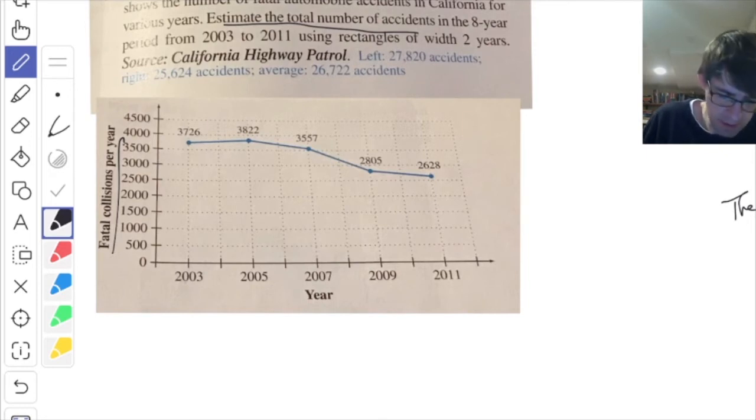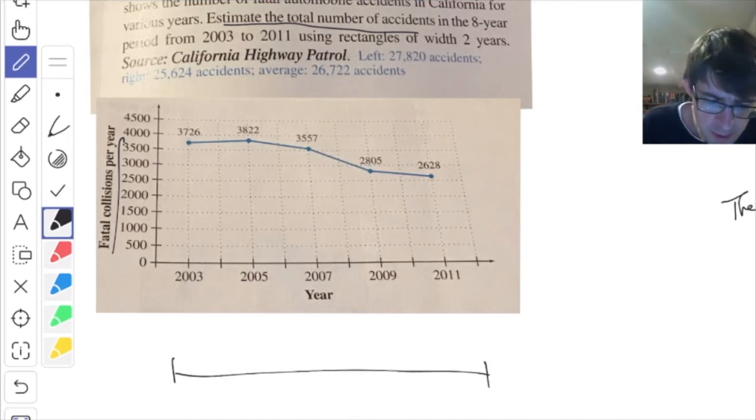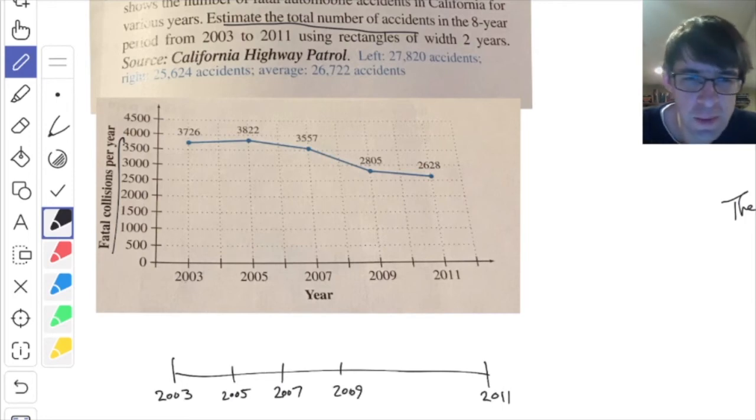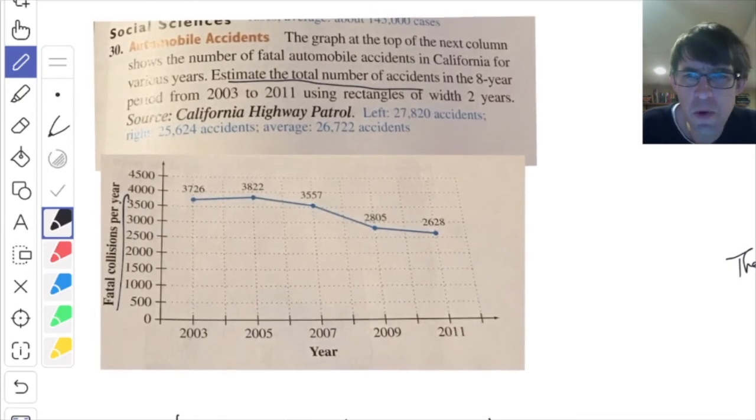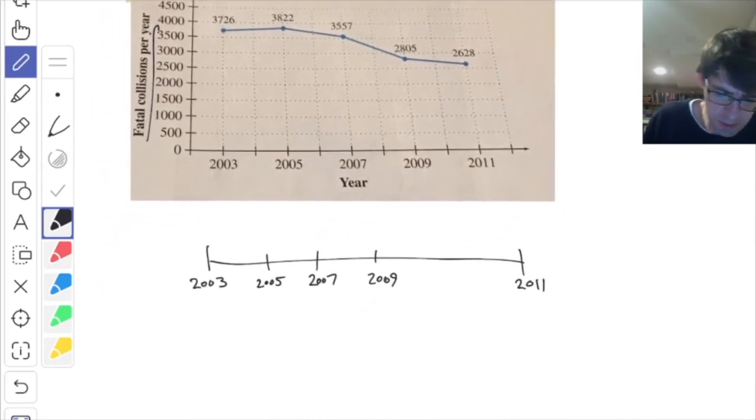The graph tells you accidents per year, so that's the rate of change. Your job is to estimate the total number of accidents in this eight year period, using rectangles of width two years. Since you've got the graph, my interval will be from 2003 to 2011. They straight up told you to use rectangles with width two years. This one doesn't say whether you're supposed to use the left or the right, but you're supposed to do it on the left endpoints and then do it on the right endpoints.